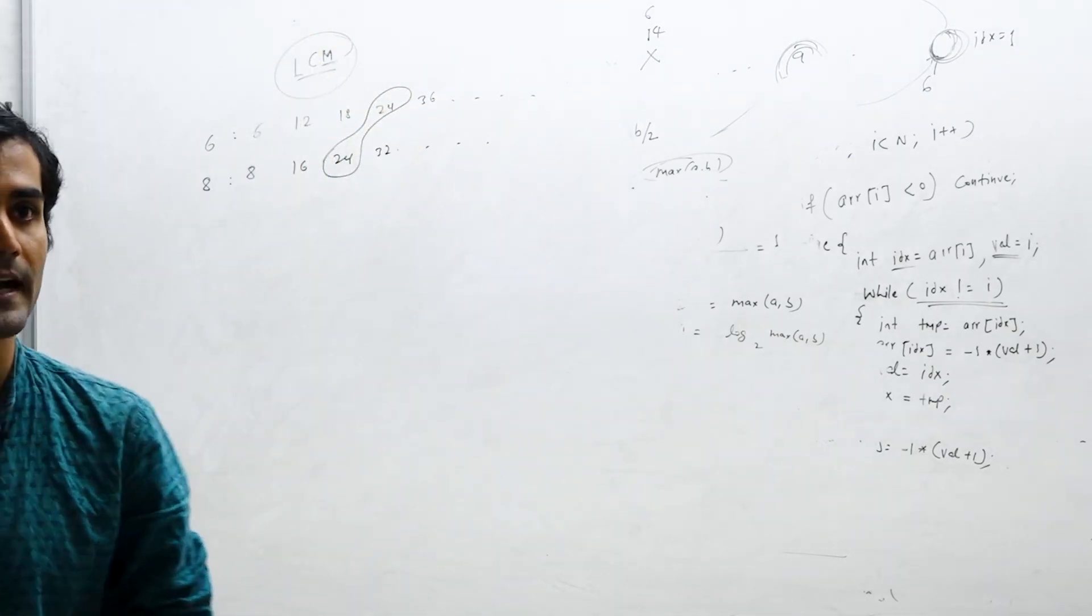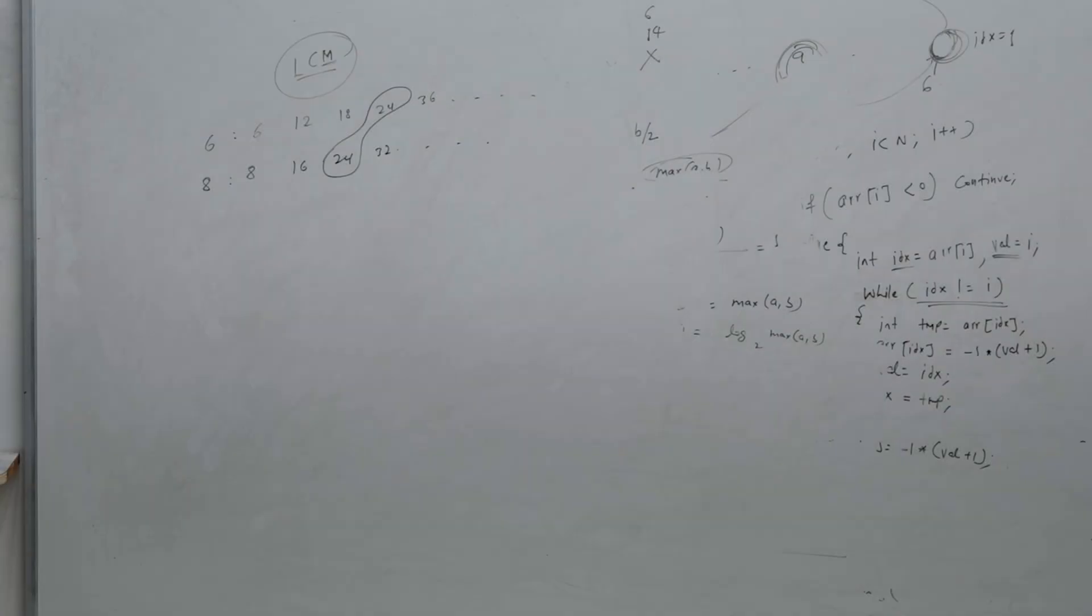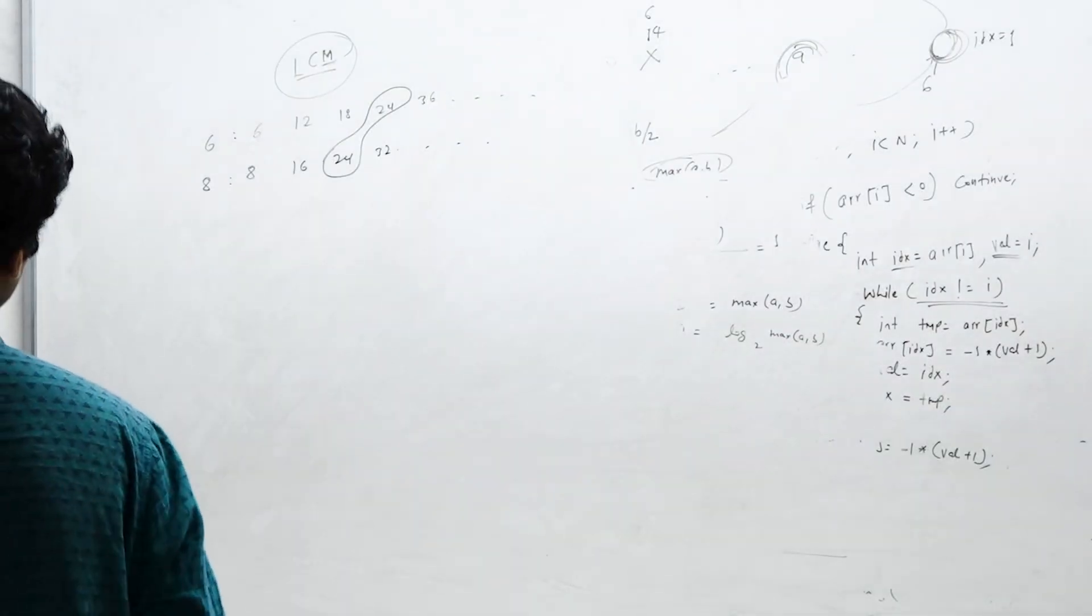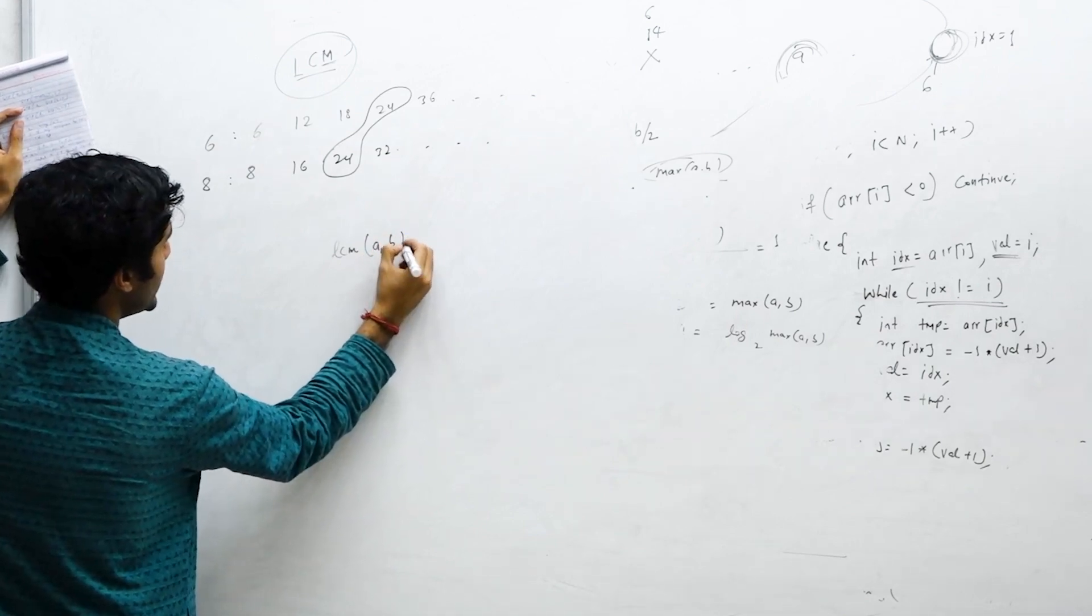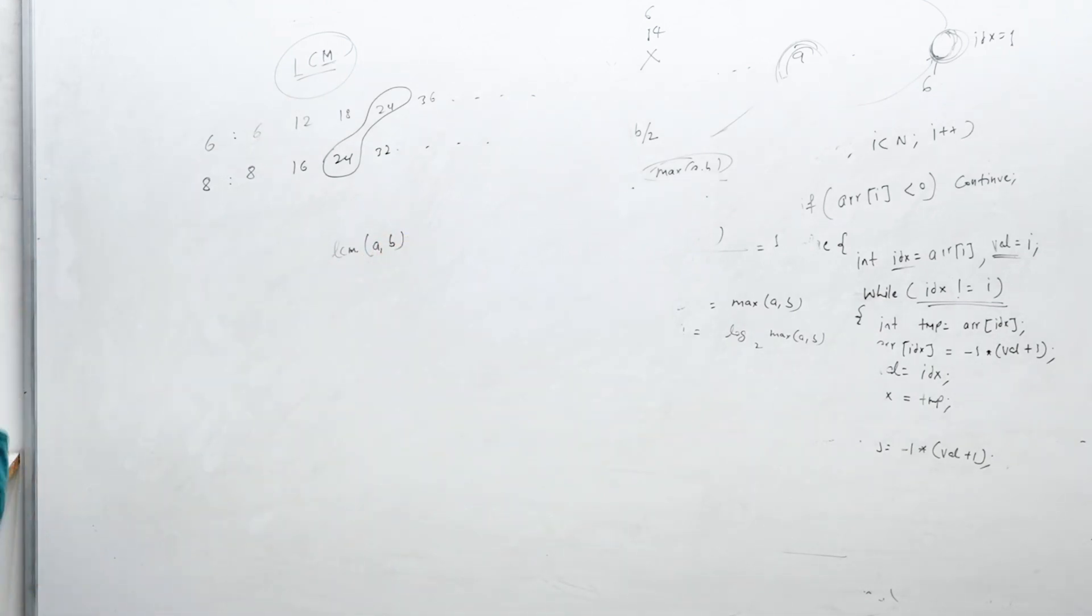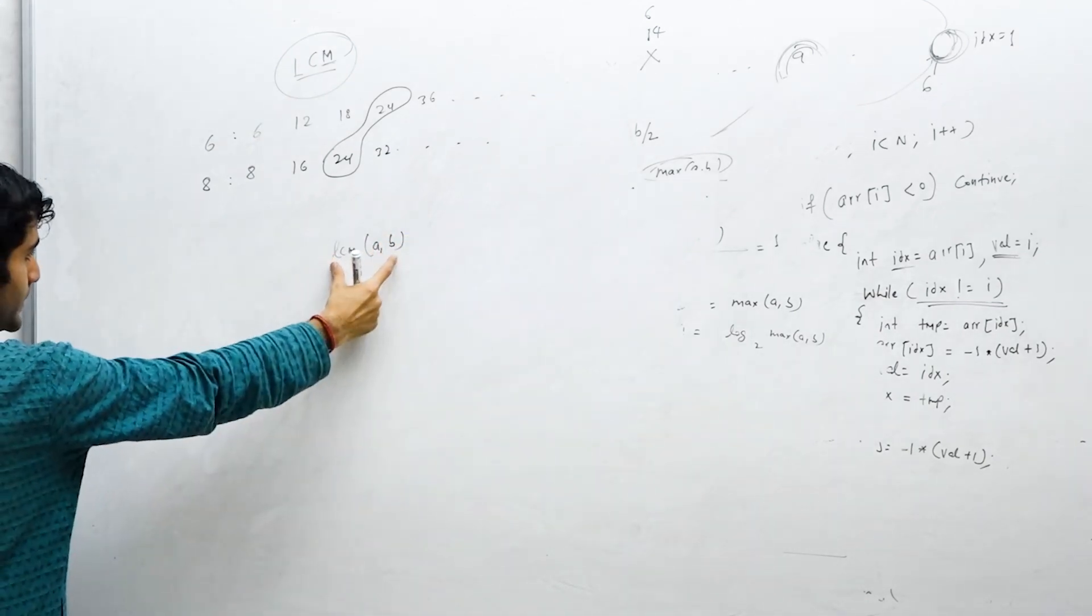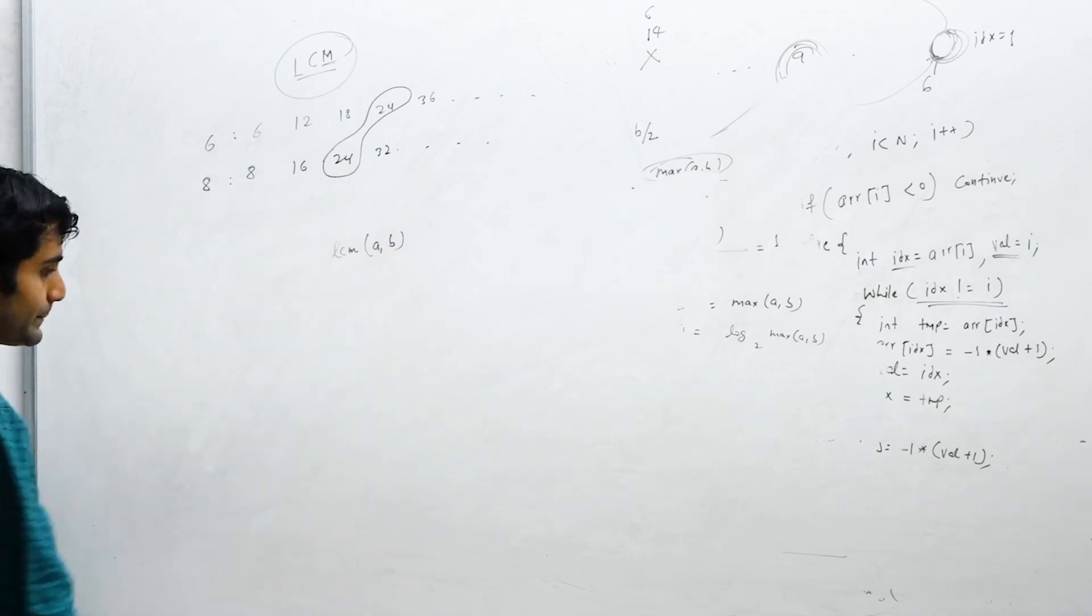The first multiple which is common will be regarded as the lowest common multiple. So this is how LCM is defined. Now can somebody tell me, if I am supposed to find LCM of a comma b, what could be the minimum value of this?